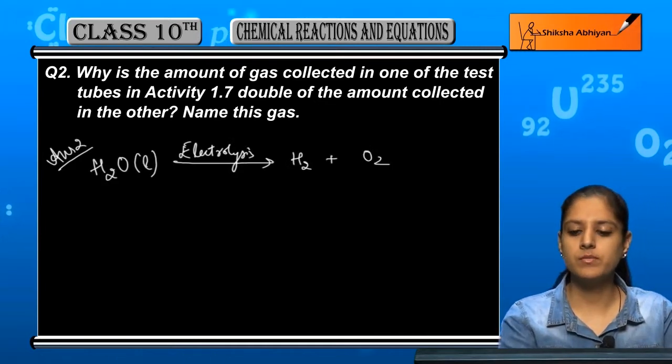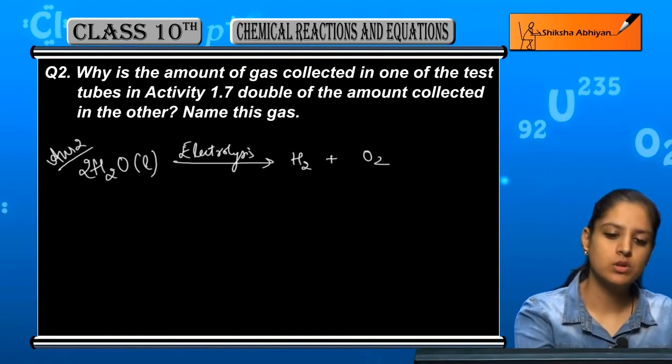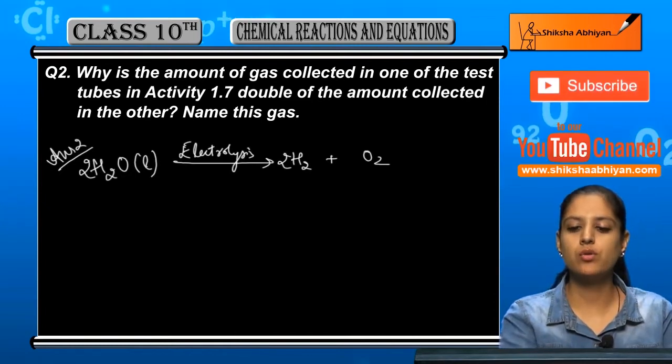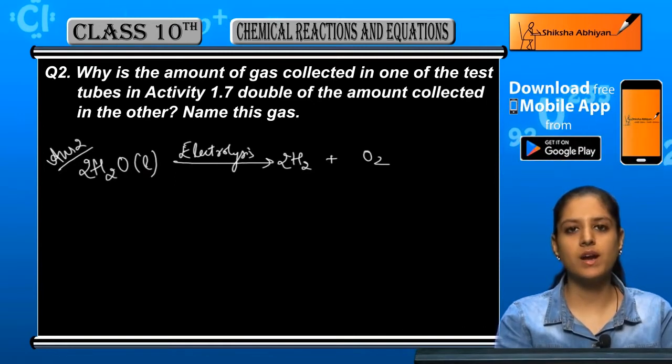water converts into two gases: H2 and O2. The balanced equation is 2H2O will give you 2H2 and O2.